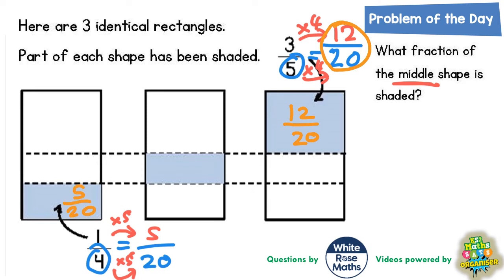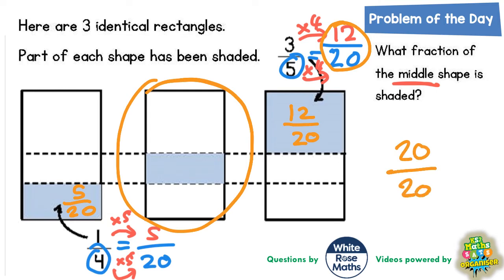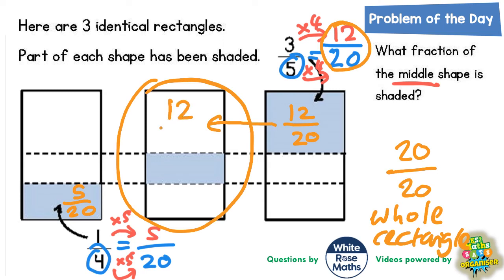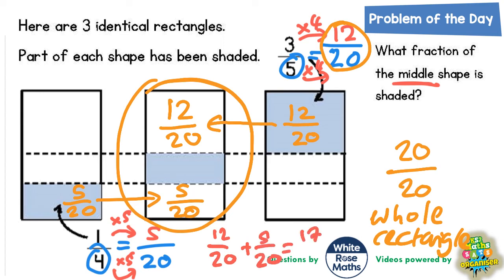This is where the clever bit comes in: the whole rectangle is twenty twentieths. We know that the twelve twentieths on the right hand side is the same size as the twelve twentieths at the top of the middle rectangle, and the five twentieths is the same size as the piece at the bottom of the middle rectangle. So we've got twelve twentieths and five twentieths — twelve twentieths plus five twentieths is seventeen twentieths.